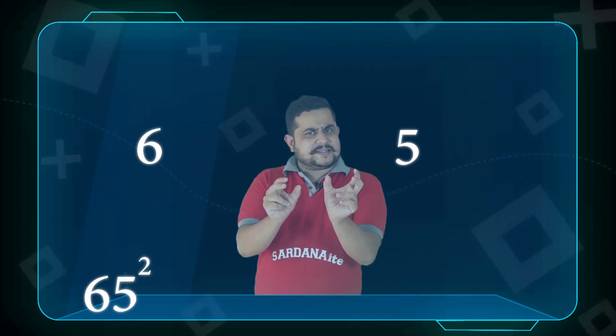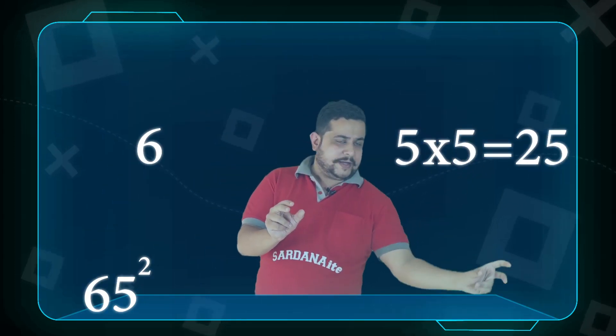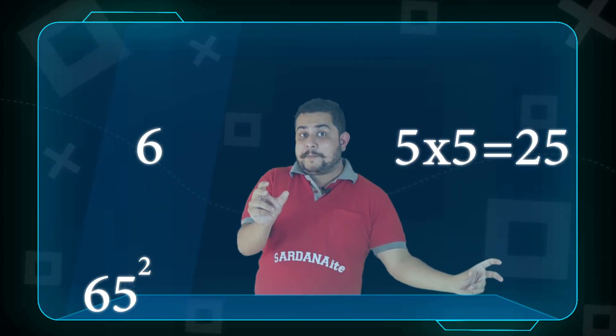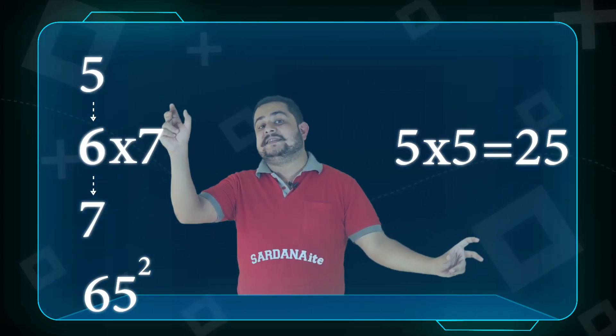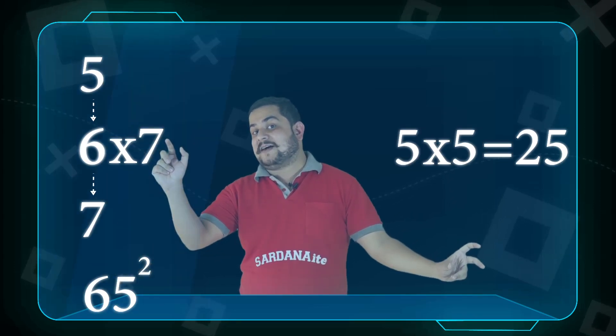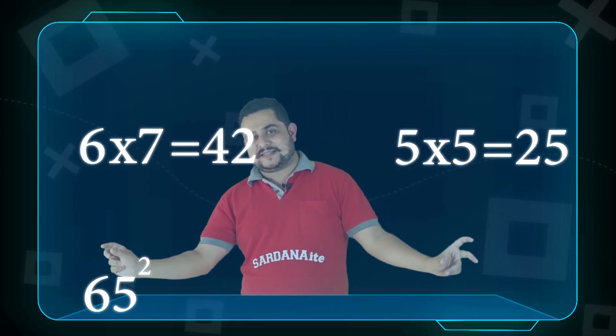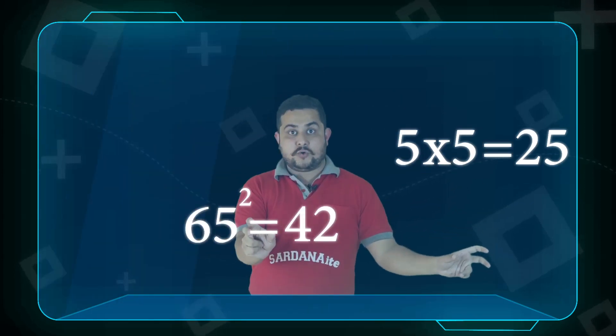Let's take another example. We have to find out the square of 65. How many digits are here? 6 and 5. The unit digit is 5. Take the square of 5 — you will get 25. Now, what is the remaining part? 6. Just multiply 6 with its next number. What number comes after 6? 7. So, 6 into 7, you will get 42. Your answer will be 4225.